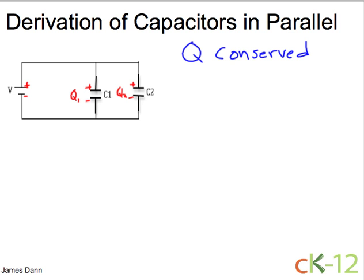Well, because charge is always conserved, I know that the total charge Q has to equal the charge on the first capacitor plus the charge on the second capacitor.